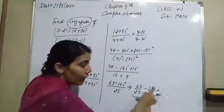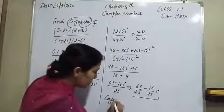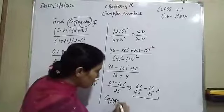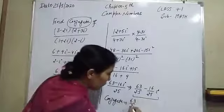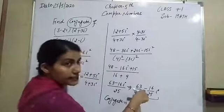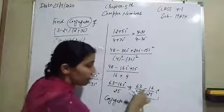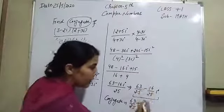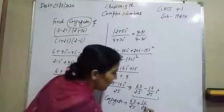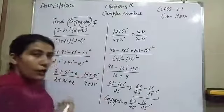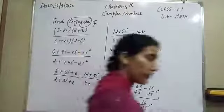So firstly convert it into the form of a complex number. Now we have to find its conjugate. You just have to change its center symbol. So the conjugate is 63 over 25 plus 16 over 25 eta — just change the negative sign to positive. That is our required answer.